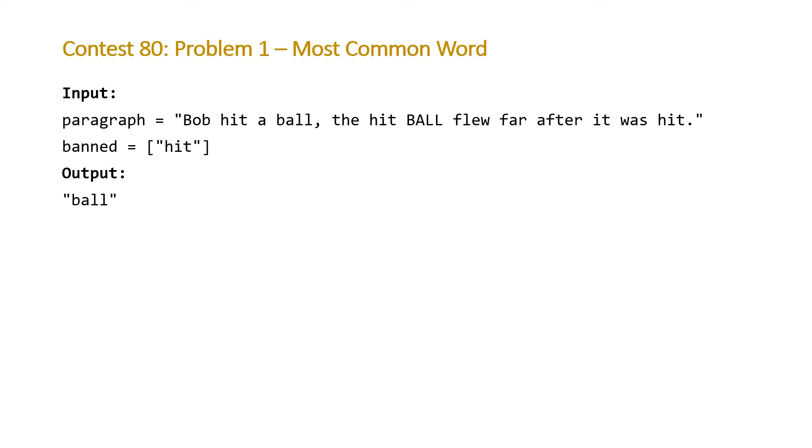So, this is the example that LeetCode provided us with. It gives us the paragraph, Bob hit a ball, the hit ball flew far after it was hit. And it gives us the banned words, which is only one that is hit. So, the thing we have to do with this problem is basically come up with a map of all of the words and a count for each of those words. So, the two most common ones are going to be ball and hit. And because hit is a banned word, we should return ball as our answer. But note that there's sort of two complications to this problem.